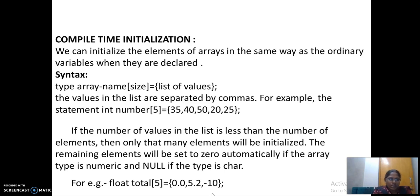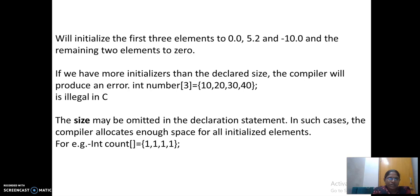What is A of, here, total of 0 is 0.0 and total of 1 is 5.2 and total of 2 is minus 10 and total of 3 and 4 are 0. Here, you are writing it as int number 3 and you are giving it as 4 numbers. Then, this type of declaration or initialization is called as illegal initialization of array values.